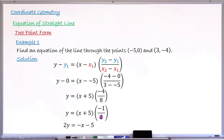So we have y equals (x plus five) times minus one over two. Multiplying both sides by two gives 2y equals minus one times x, which is minus x, and minus one times positive five, which is minus five. So the equation of this line is 2y equals minus x minus five. With this example, you should be able to write the equation of any line through two known points.